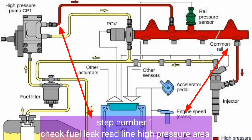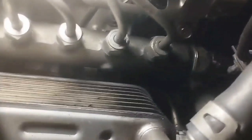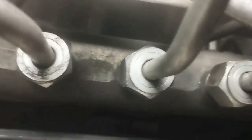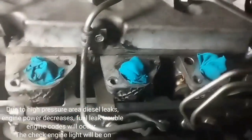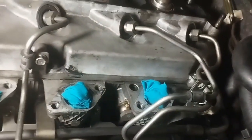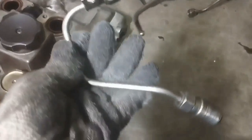Step one: check for fuel leaks in high pressure areas. Before starting the engine, visually check for fuel leaks from the fuel supply pump, fuel injectors, common rail, and fuel pipes in high pressure areas. Due to high pressure, diesel leaks cause engine power to decrease. Fuel leak trouble codes will occur and the check engine light will be on. If there is a diesel leak in a high pressure area, repair or replace it.